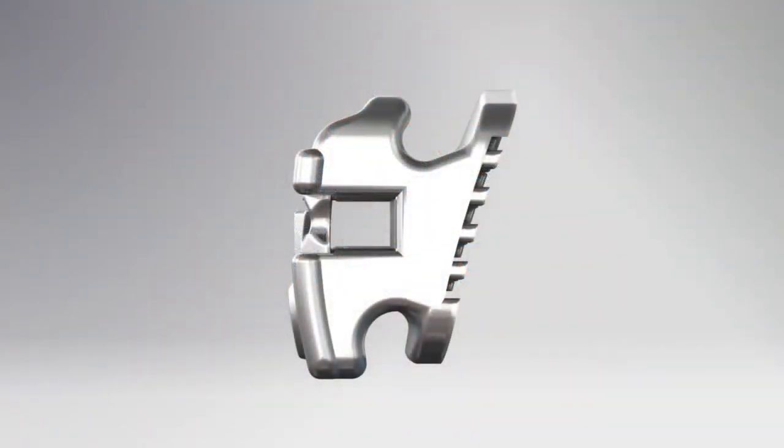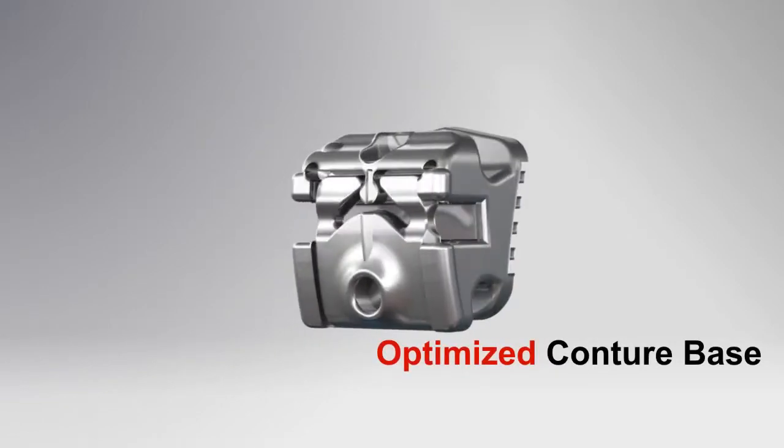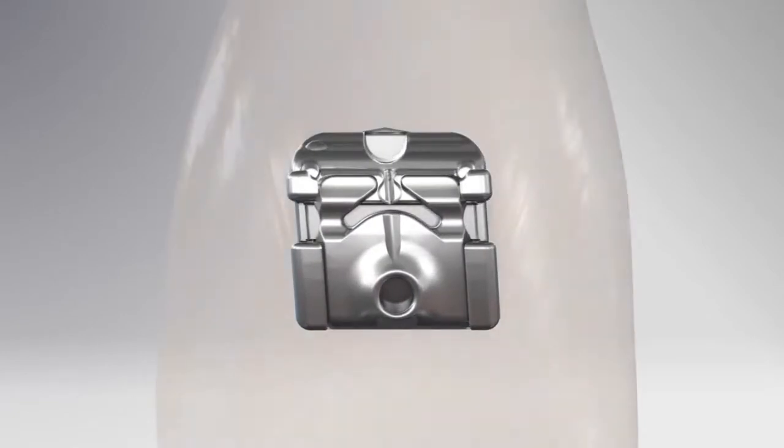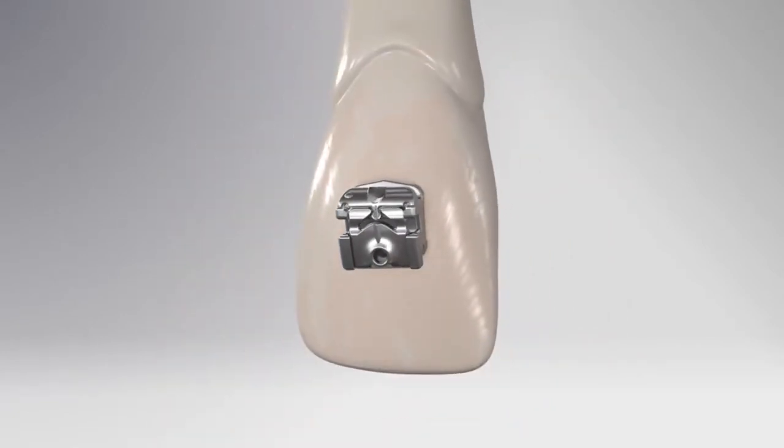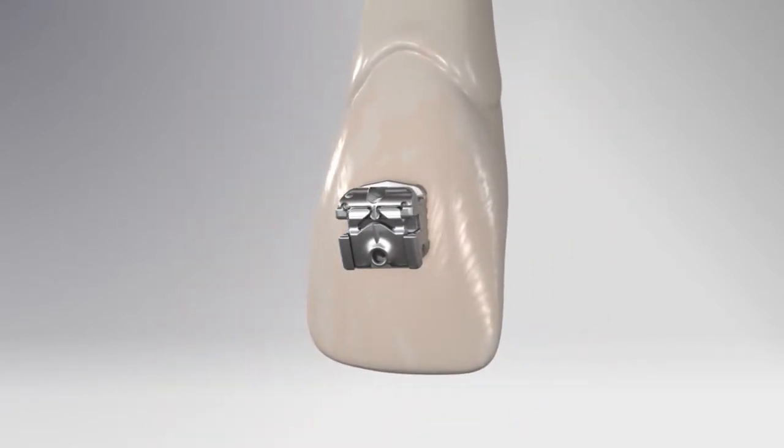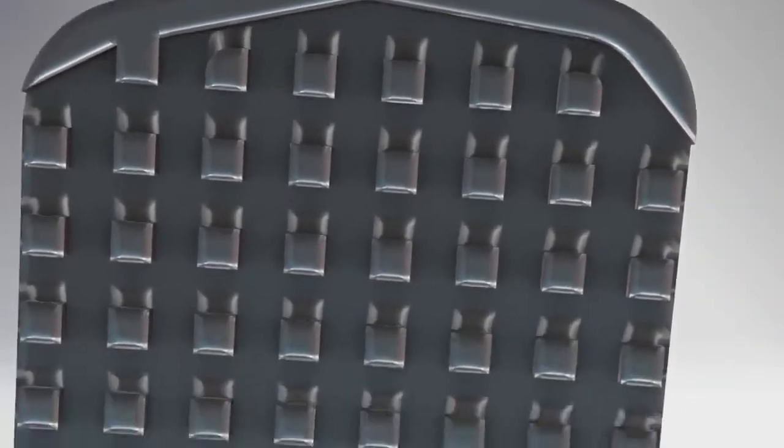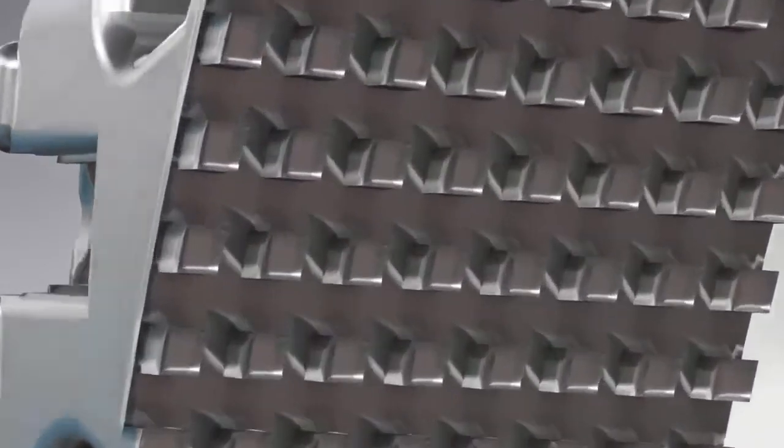The slot depth of the SLX brackets are optimized, yet another feature to ensure consistent finishing. Each bracket has an optimized compound contour base for an optimized base fit, making bracket seeding intuitive because the bracket now fits onto the tooth like a glove. In addition, the micro-etched base surface offers superior bond strength to reduce bond failures.